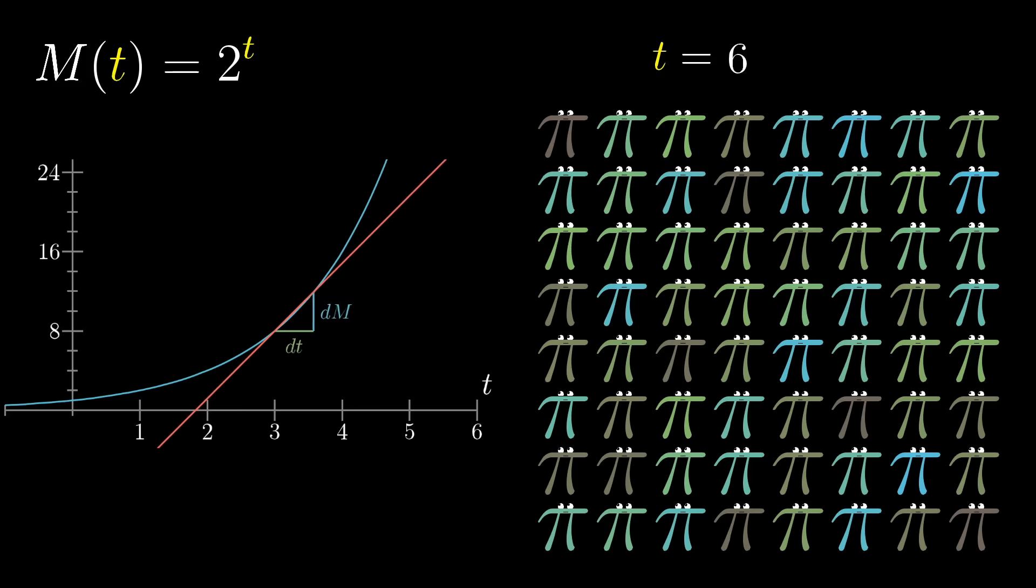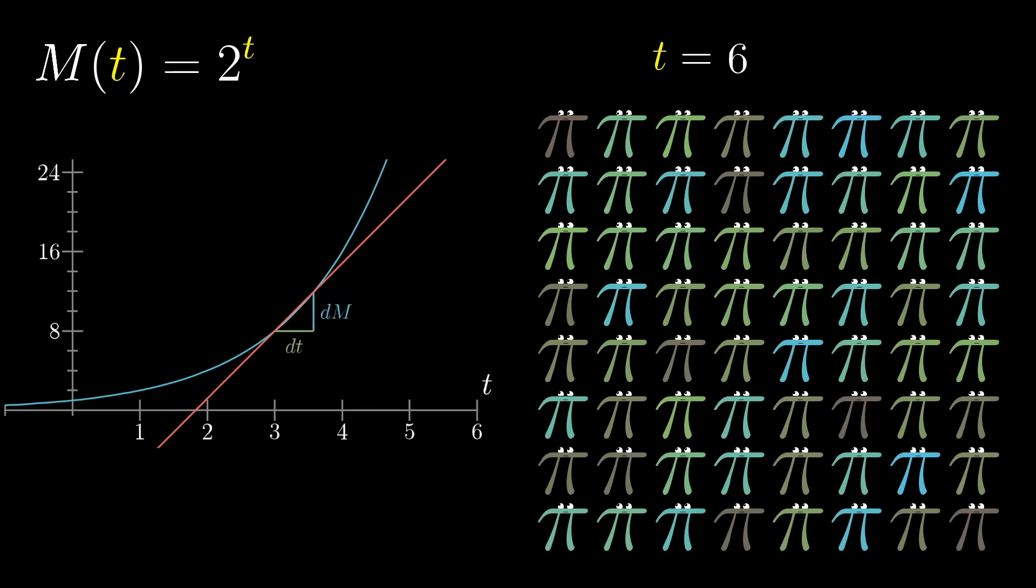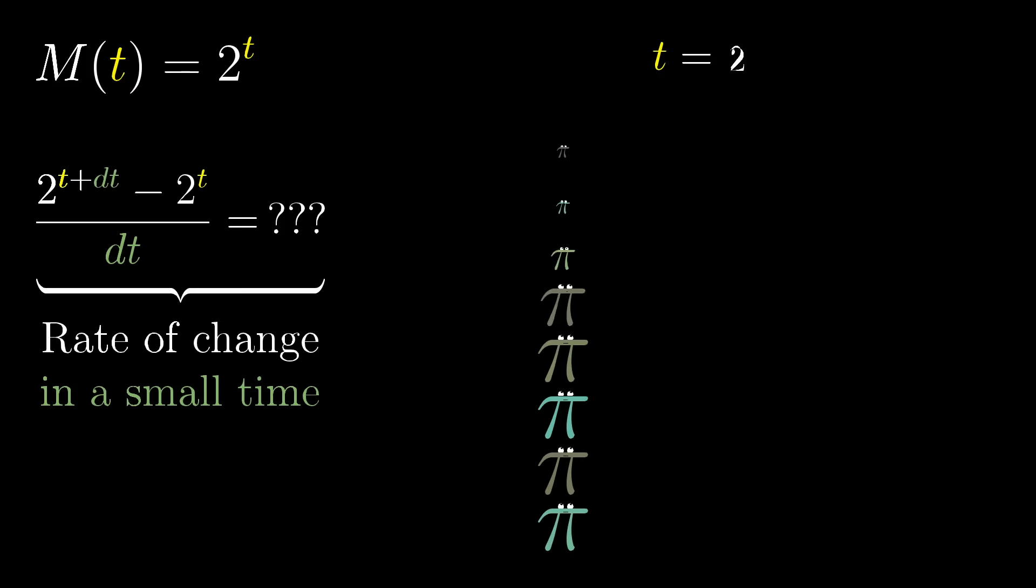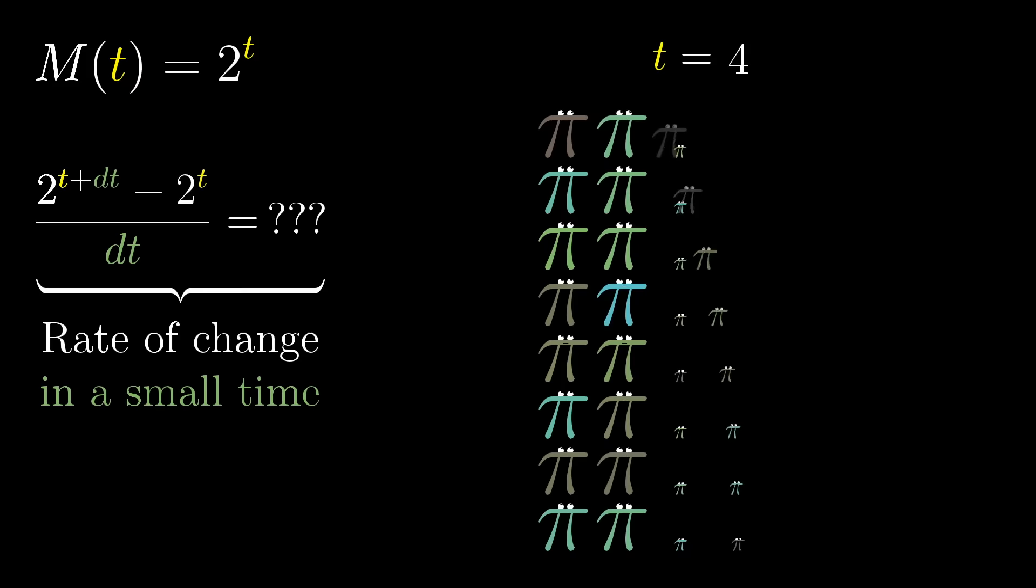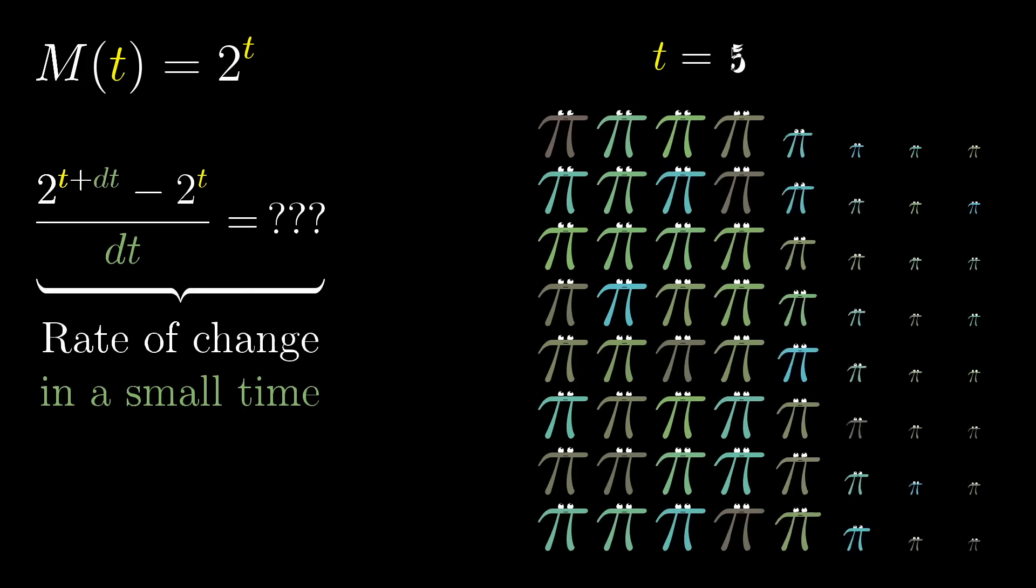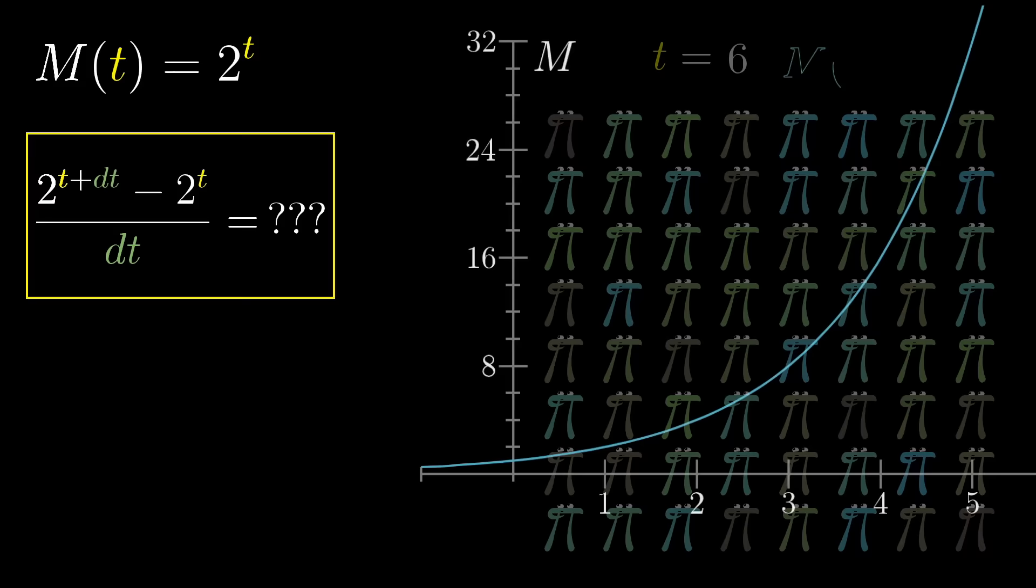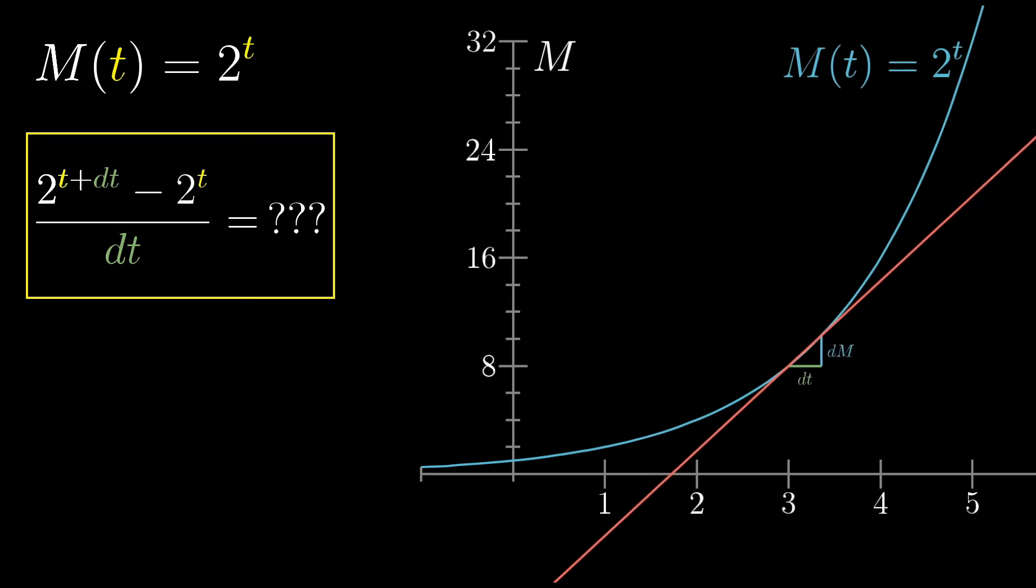But for the derivative, we need to ask what happens for smaller and smaller changes. What's the growth over the course of a tenth of a day, a hundredth of a day, one one billionth of a day? This is why I had us think of the function as representing population mass, since it makes sense to ask about a tiny change in mass over a tiny fraction of a day, but it doesn't make as much sense to ask about the tiny change in a discrete population size per second. More abstractly, for a tiny change in time dt, we want to understand the difference between 2 to the t plus dt and 2 to the t, all divided by dt. The change in the function per unit time, but now we're looking very narrowly, around a given point in time, rather than over the course of a full day.